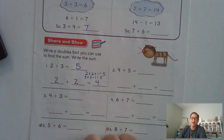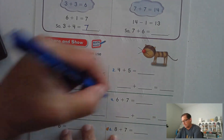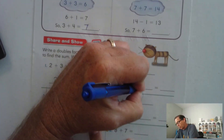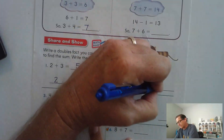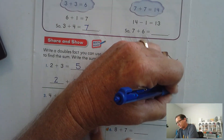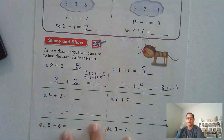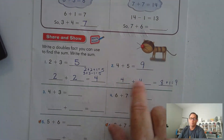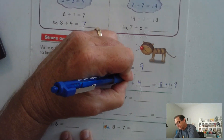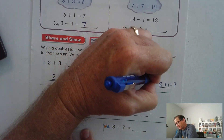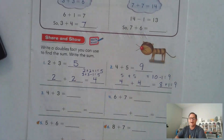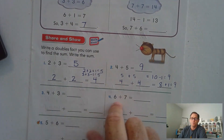How about 4 plus 5? I could clearly use 4 plus 4, which is 8, plus 1, which is 9. Or I could use 5 plus 5 and take away 1 to get 9. So I can use either one.